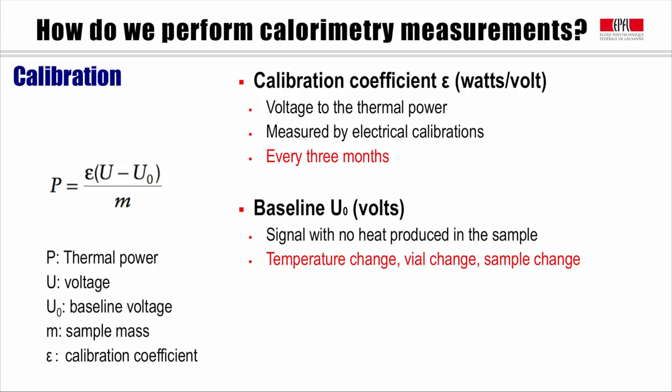Based on heat flow measurement principle, the thermal power P is proportional to the voltage signal from the sensor U, as indicated in the equation. To establish the relationship, two parameters need to be determined. They are calibration coefficient epsilon and baseline voltage U0.